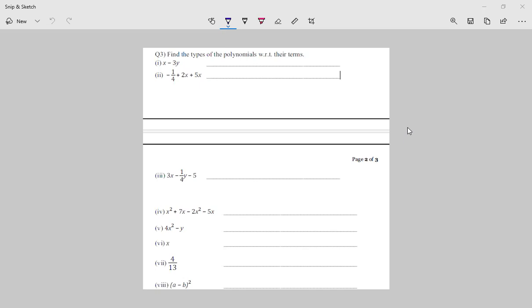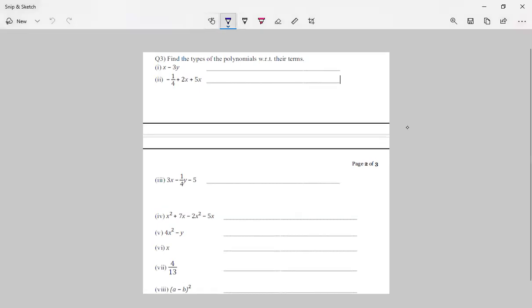The worksheet question number three is find the type of the polynomial with respect to their terms. If you see question 3 part 1, it's x minus 3y. There are two terms, so it's called binomial.